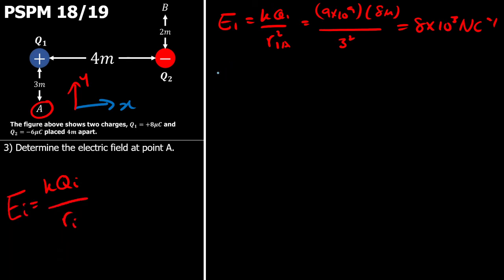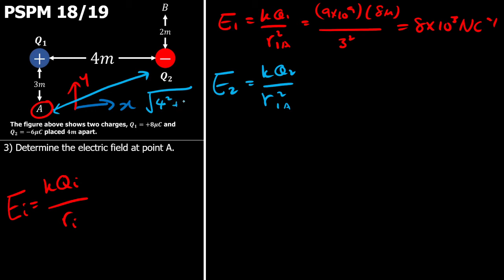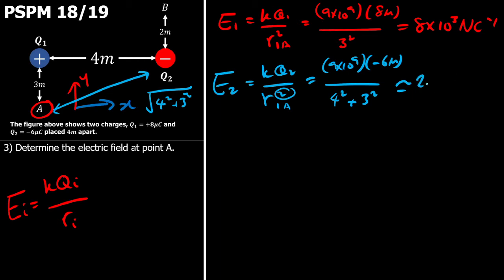On the other hand, if I calculate the electric field from charge Q2, again I'll have the same formula. The difference is it is Q2 to A squared, and I can find that distance which is the square root of 4 squared plus 3 squared. Because we're going to square it, the square root just vanishes. So I will have 9 times 10 to the power of 9, negative 6 microcoulombs, over 4 squared plus 3 squared. This gives me approximately 2.16 times 10 to the power of 3 newton per coulomb.